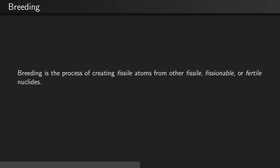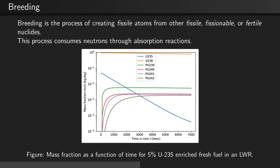Breeding is the process of creating specifically fissile atoms from other fuel atoms in the core, such as fissile, fissionable, or fertile nuclides. Breeding consumes neutrons through neutron absorption.